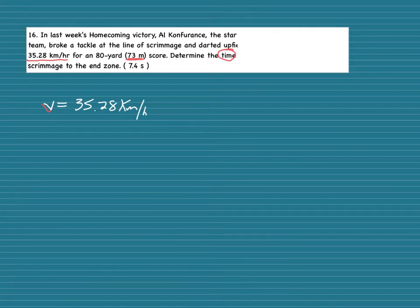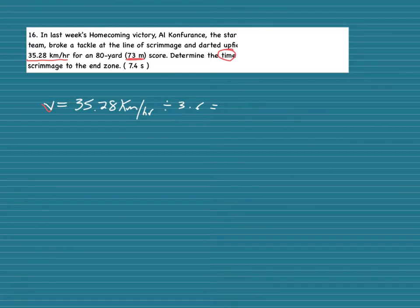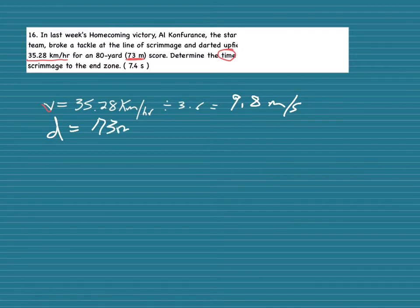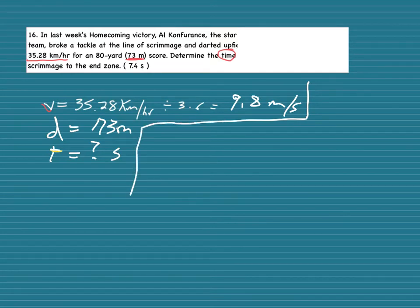Since the velocity is in kilometers per hour, I automatically know I need to divide by 3.6. So 35.28 divided by 3.6 gives me 9.8 meters per second. My displacement is 73 meters, and I'm solving for time, which will be in seconds.